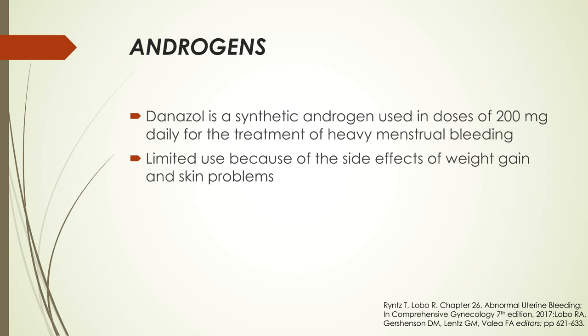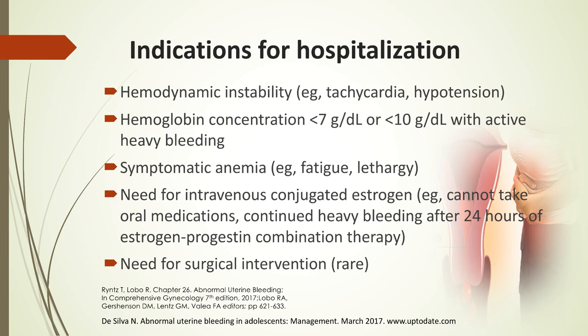We can also offer androgens in the form of danazol, a synthetic androgen used in doses of 200 mg daily for the treatment of heavy menstrual bleeding. However, danazol is of limited use because of side effects including weight gain and skin problems. Indications for hospitalization include hemodynamic instability, hemoglobin concentration less than 7, or less than 10 with active heavy bleeding, symptomatic anemia, need for intravenous conjugated estrogen, and need for surgical intervention.